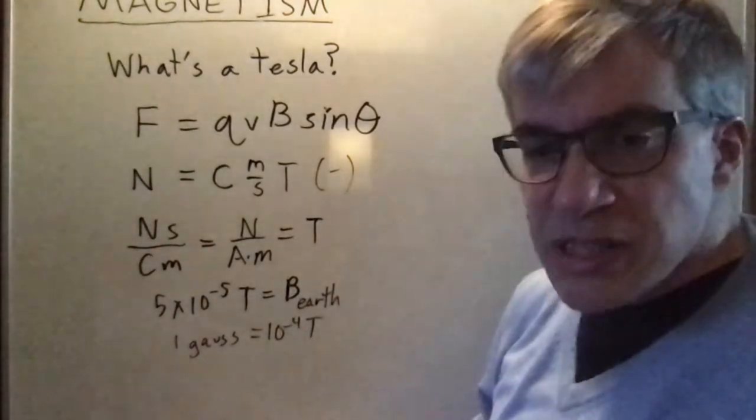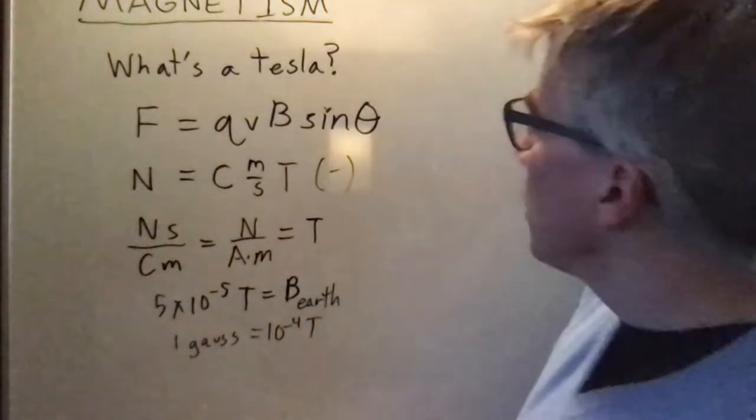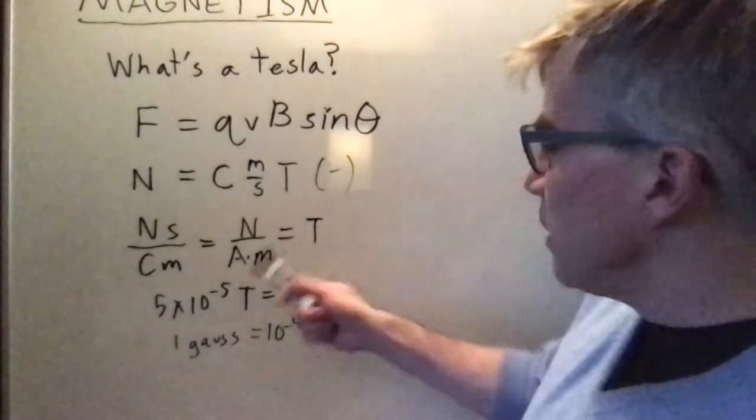And so Earth's magnetic field is about half a Gauss. That varies place to place on our surface. So that's what a Tesla is and what a Gauss is.